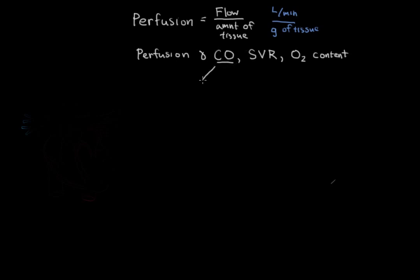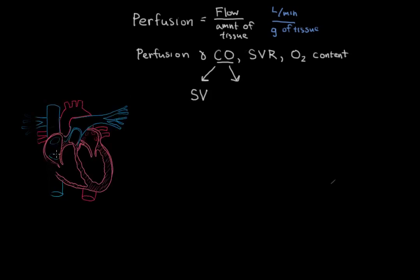So cardiac output can be determined by two things. It can be determined by the stroke volume, so let's take a look at the heart that I have over here. So stroke volume is the amount of blood that escapes the heart per beat. And the other factor that influences cardiac output is heart rate.